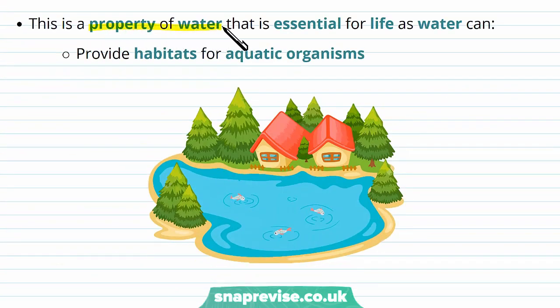This property of water, in that it exists as a liquid at room temperatures, is very essential for life. First of all, it can provide a habitat for aquatic organisms. At room temperature, or most temperatures that fluctuate through the day, we have lakes or ponds which can provide habitat, for example, fish.